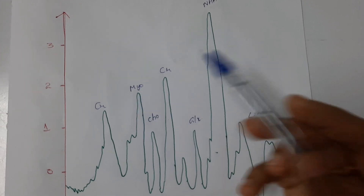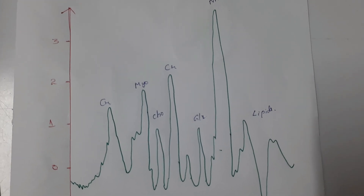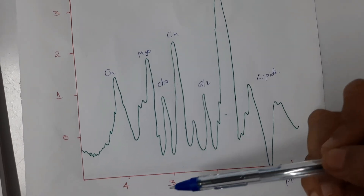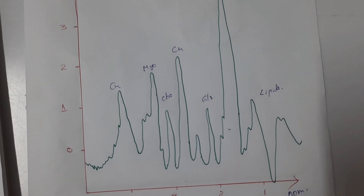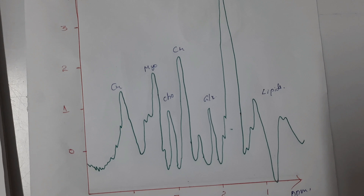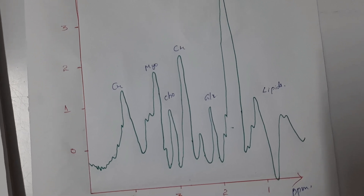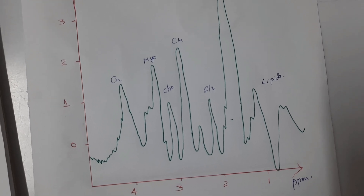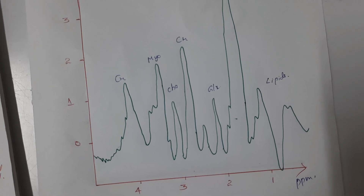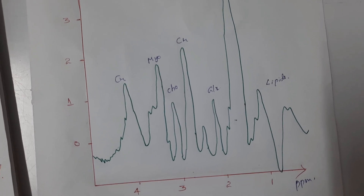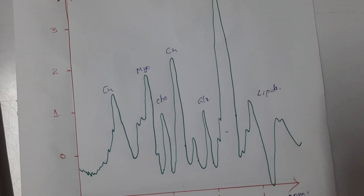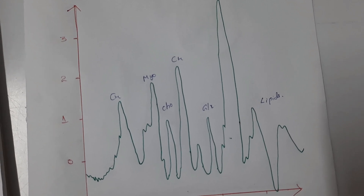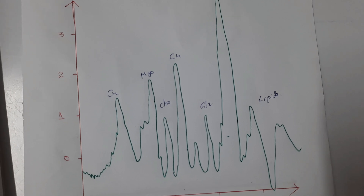The next component is myoinositol, represented by MYO. It is assigned at 3.56 ppm. Elevated myoinositol occurs with proliferation of glial cells, as in inflammation. Myoinositol will be elevated in gliosis, astrocytosis, and Alzheimer's disease. In these three conditions, the concentration of myoinositol will be increased.